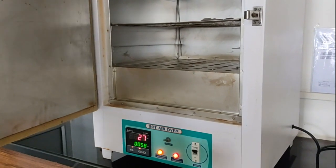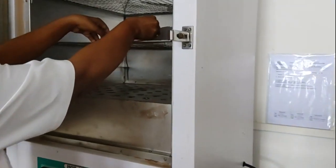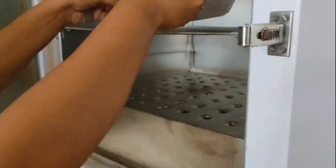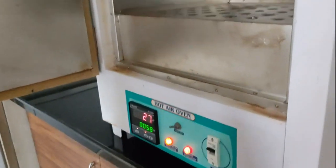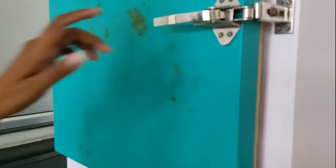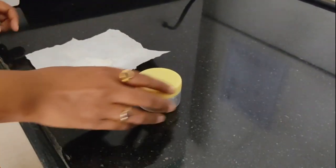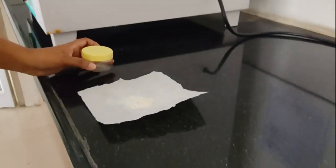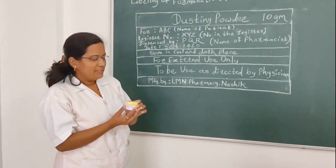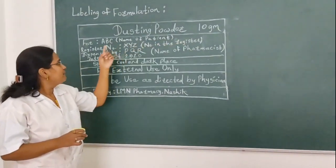We will proceed to sterilize this powder in the oven at 160 degrees Celsius. We have the hot air oven ready. I am going to place this powder into the hot air oven for 1 hour for sterilization at 160 degrees Celsius. After 1 hour the powder is completely sterilized. I am going to transfer this sterile powder into the container.